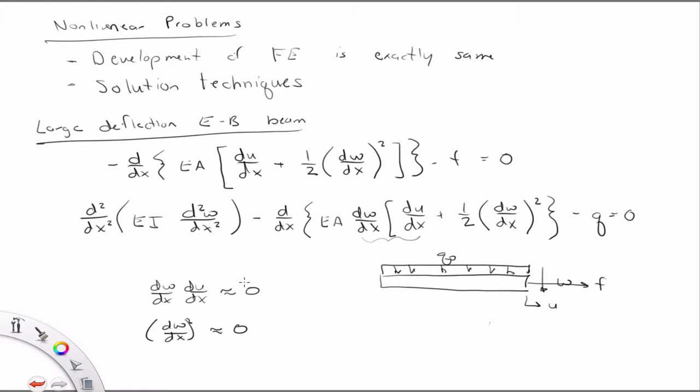The first one becomes the 1D bar equation that we examined thoroughly, and the second one becomes the Euler-Bernoulli beam equation, which we didn't really examine in class, but you derived its weak form as part of a homework assignment. You might have not known that you did that because I never said what the physics behind the equation were, but I asked you to develop for that fourth order PDE, right? Well, that's the second equation under these assumptions where they're decoupled. But if they're coupled, then you have a nonlinear problem.